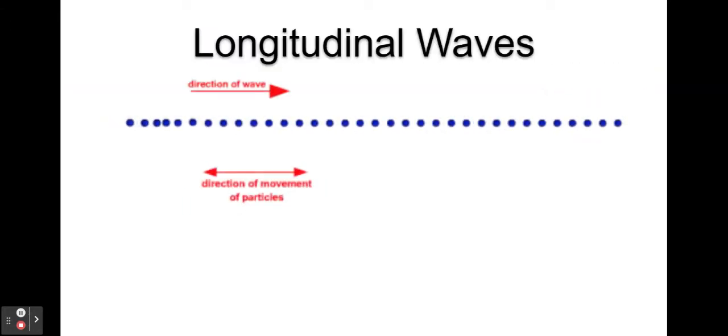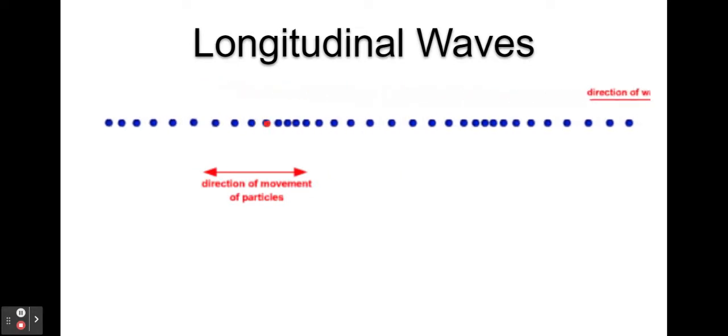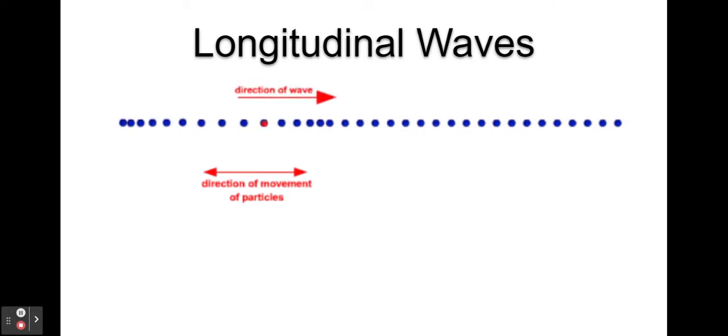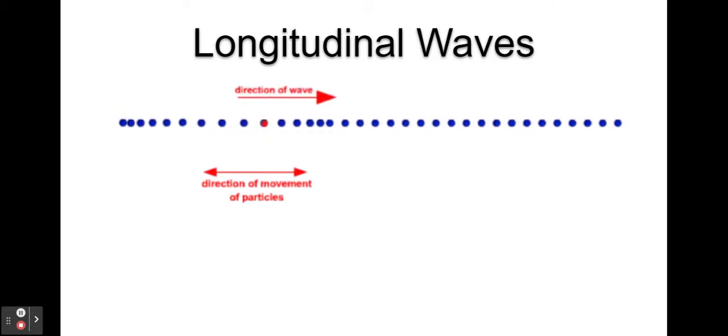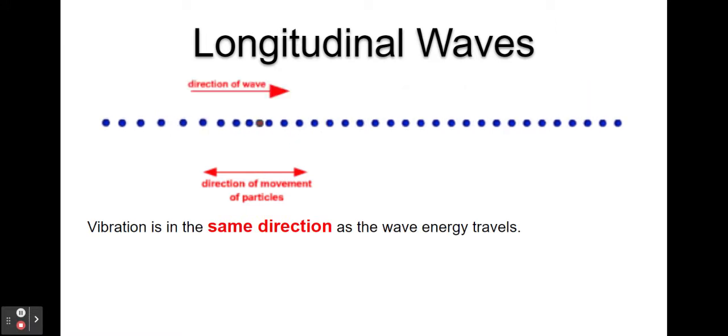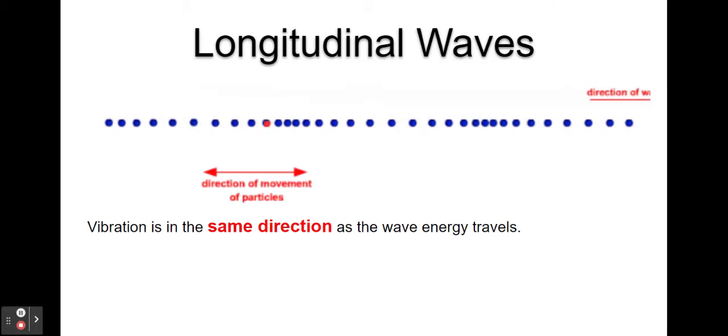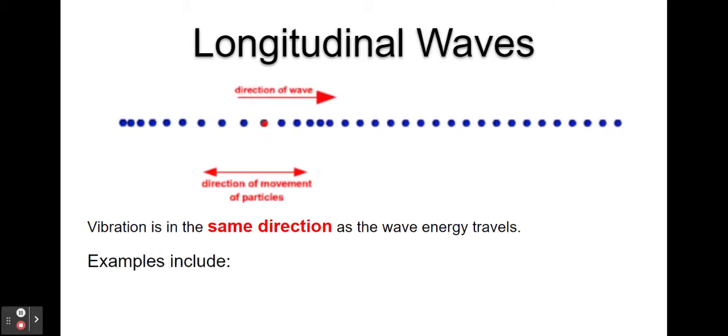There are two types of waves we need to be familiar with. The first is longitudinal waves. We can see the direction of the wave is from left to right across the screen, but the particles within the wave are also oscillating left to right across the screen. In a longitudinal wave, the vibration is in the same direction as the energy travels. An example of a longitudinal wave would be sound waves.